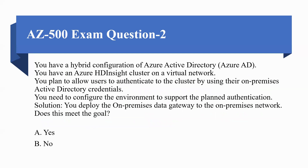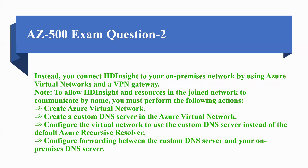You have an Azure HDInsight cluster on a virtual network. You plan to allow users to authenticate to the cluster by using their on-premises Active Directory credentials. You need to configure the environment to support the planned authentication. The solution provided is: you deploy the on-premises data gateway to the on-premises network. Does this solution meet the goal? The answer is No, because instead you can connect HDInsight to your on-premises network by using Azure Virtual Network and a VPN gateway.